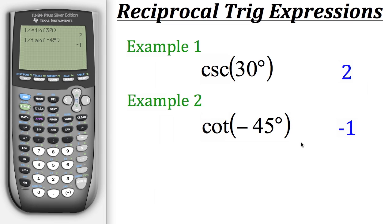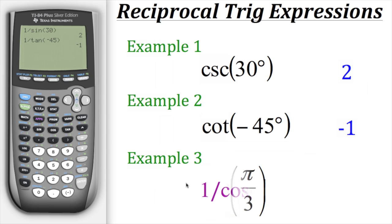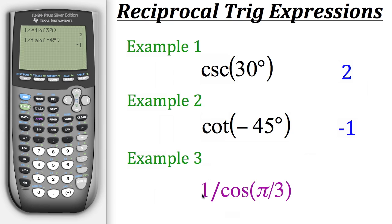Now let's try one more example. We have the secant of pi over 3. In order to evaluate it on the calculator, we'll have to use its reciprocal function, which is cosine. So to put it into the calculator, we need to rewrite it to say 1 over cosine of pi over 3.